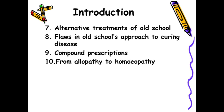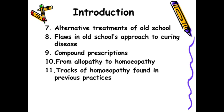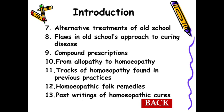Then from allopathy to homeopathy — how the practice of medicine was shifting — examples have been given. Tracts of homeopathy found in previous practices: the ancient schools also followed homeopathy by using similar remedies. Folk remedies have been described, and finally past writings on homeopathic cure have been covered here.